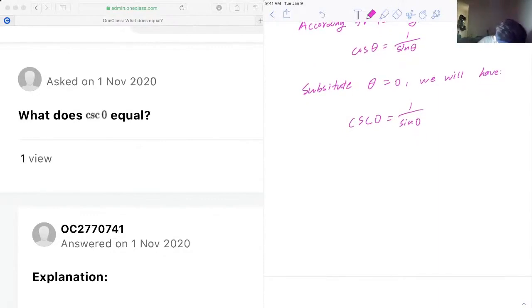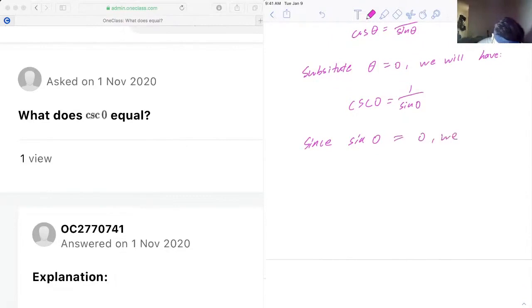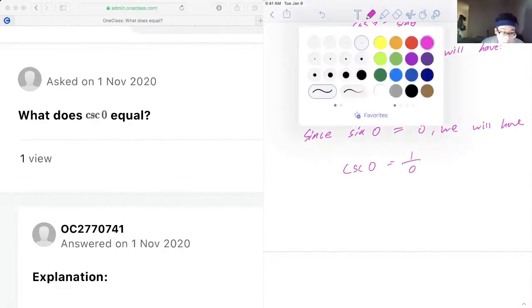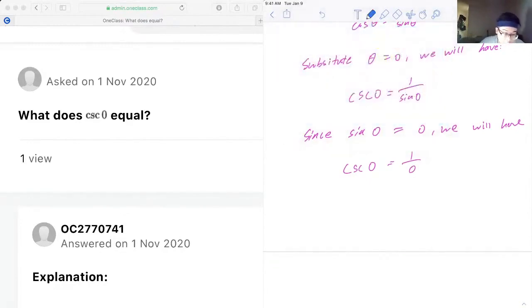Since sine zero is equal to zero, we will have cosecant zero is equal to one over zero. Since the denominator cannot be equal to zero, cosecant zero does not exist.